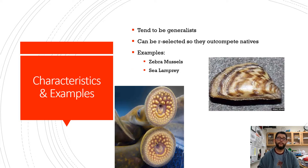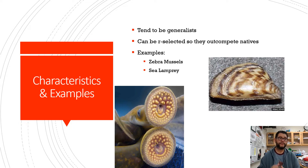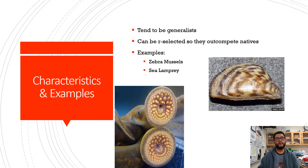The typical characteristics are that they tend to have generalist characteristics — they are r-selected so they out-compete really well. It's good to know a couple of examples, so here are some Great Lakes examples, like the zebra mussels.